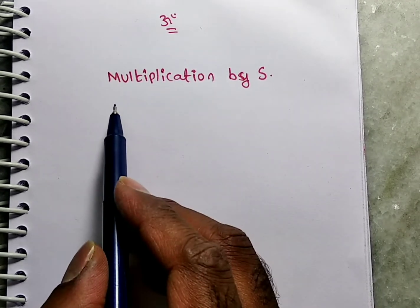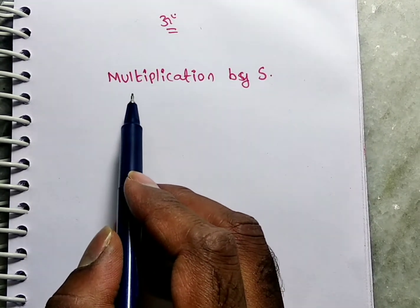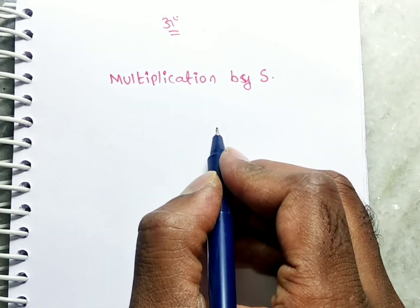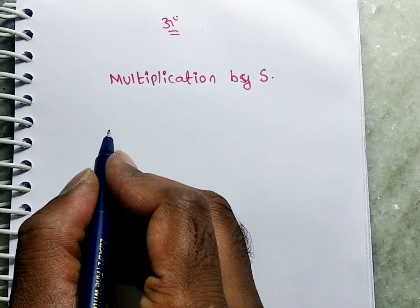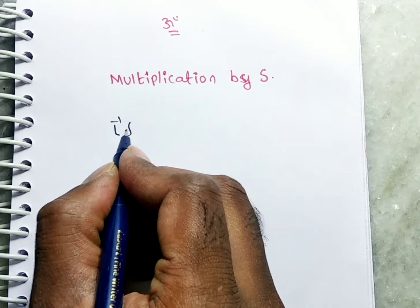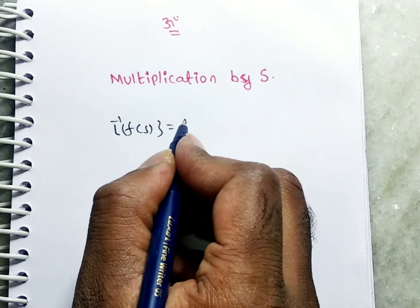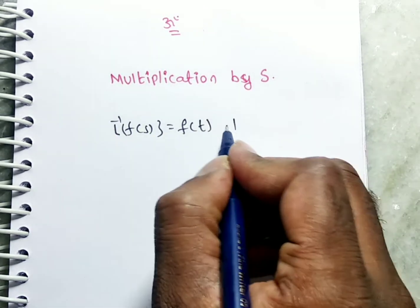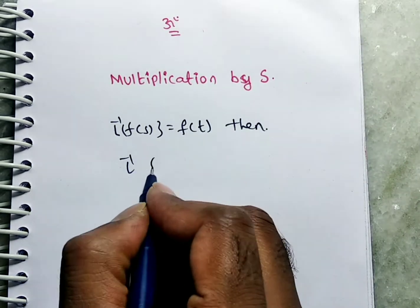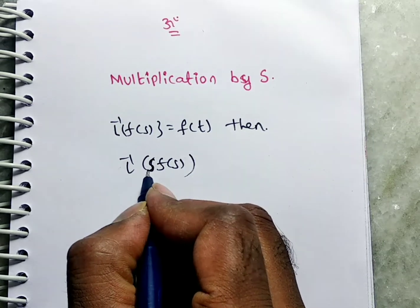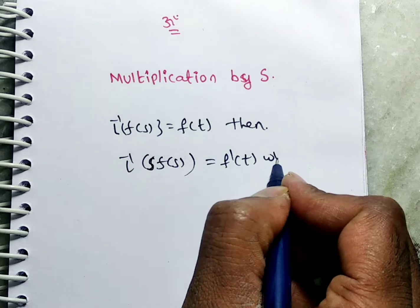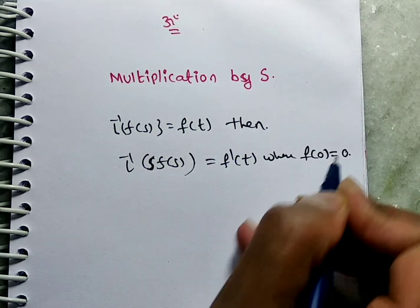Friends, in this video we are discussing the inverse Laplace transform of multiplication by S. The statement is: if L inverse of F(S) equals f(T), then L inverse of S·F(S) equals f'(T), where f(0) equals 0.